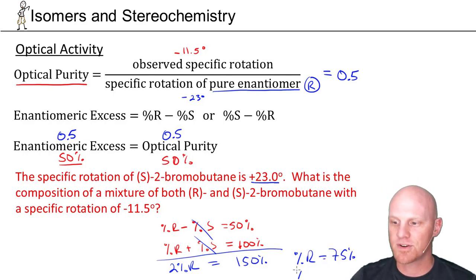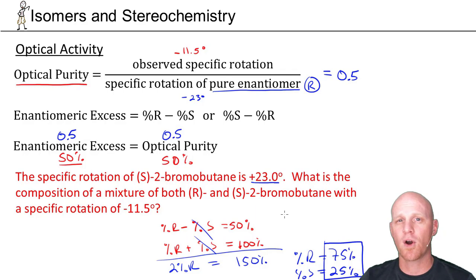If the percent R is 75%, then your percent S is going to be 25%. You can see, yeah, the difference between those two, there's 50% more R. That's what we mean by enantiomeric excess.